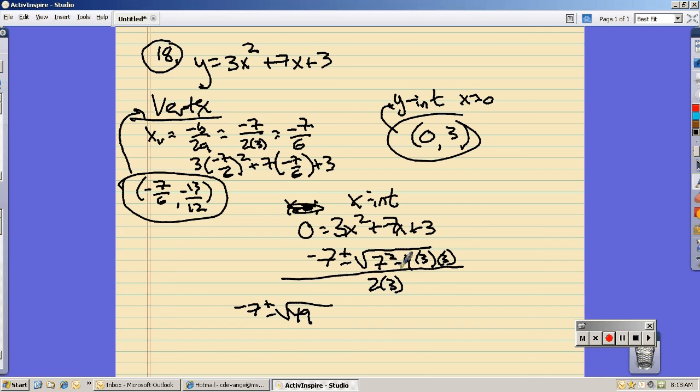This is going to be minus. Basically, 4 times 9 over 6. Negative 7 plus or minus 49 minus 36 is 13.